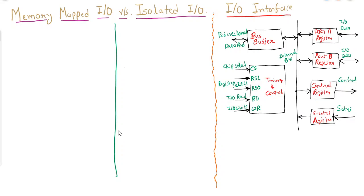Hello students. In the previous video we discussed the IO and bus interface module — the need for an interface, how many types of commands there are, and how the interface plays a key role in performing input/output operations. Our topic in this tutorial is Memory Mapped IO versus Isolated IO: how the CPU manages input/output operations and memory operations, and how it stores data received from memory as well as from IO devices. We have two options: Isolated IO and Memory Mapped IO.